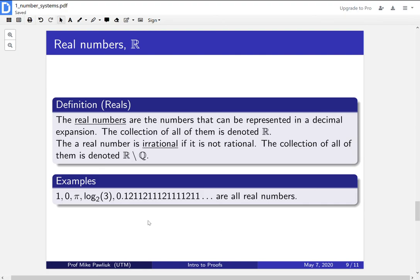So some examples of real numbers, 1, 0, pi, log base 2 of 3, this decimal expansion, whatever it is. This is not something that I just made it up. It's just a decimal expansion. But because it has a decimal expansion, it's a real number.